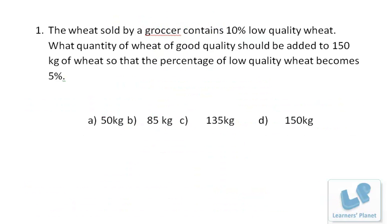In this problem, once again a simple one based on allegation and mixtures: the wheat sold by a grocer contains 10% low quality wheat. What quantity of good quality wheat should be added to 150 kilograms of wheat so that the percentage of low quality wheat becomes 5%? The good quality wheat as of now is 90%.